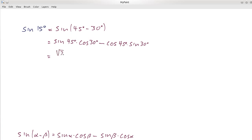So sine of 45 degrees we know is the square root of 2 over 2. Cosine of 30 degrees is the square root of 3 over 2. Minus stays a minus. And then cosine of 45 degrees, that's the square root of 2 over 2. Sine of 30 degrees is 1 half. And now we've evaluated sine of 15 degrees.